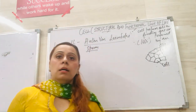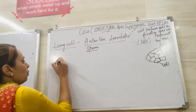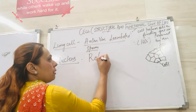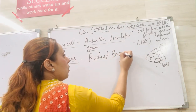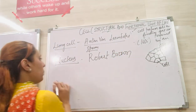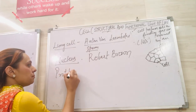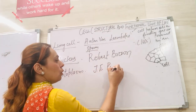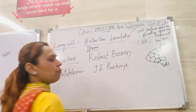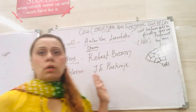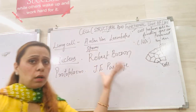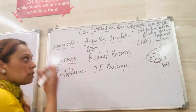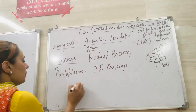Then, who discovered the nucleus? The nucleus was discovered by Robert Brown. The protoplasm was discovered by J.E. Purkinje. You have to remember all the names of these scientists because sometimes in the exam they will ask who discovered what — or give you the organ, protoplasm, or nucleus and ask you the name of the scientist.